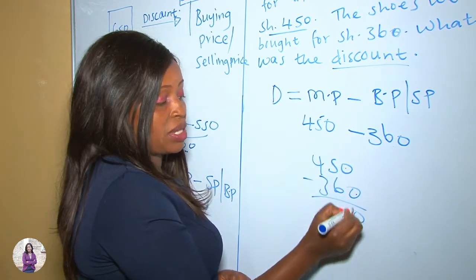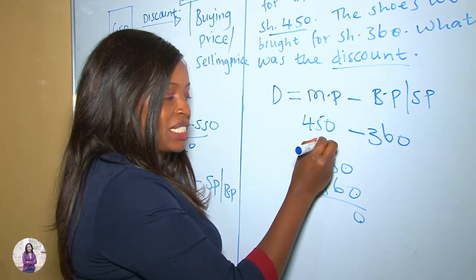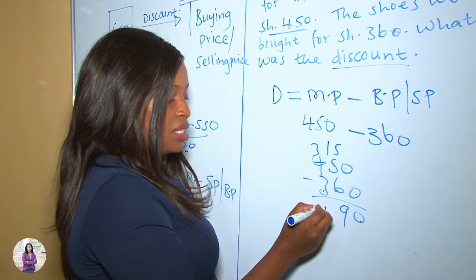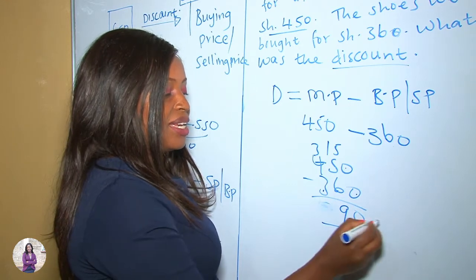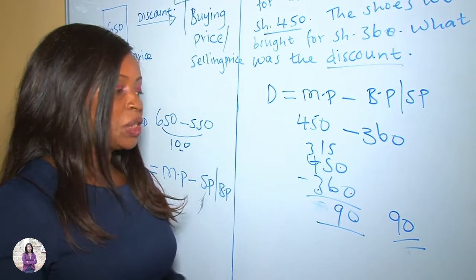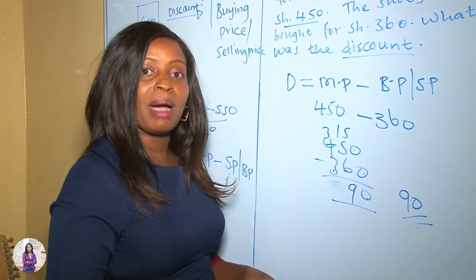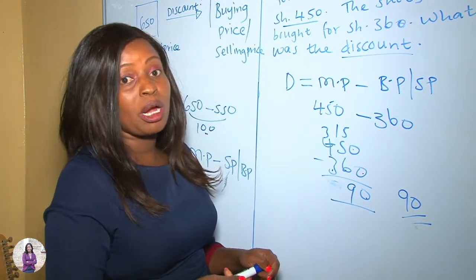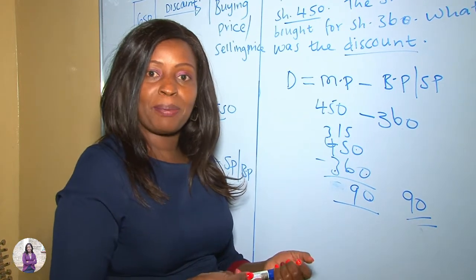Zero minus zero is zero; 5 cannot take away 6, so we borrow — 15 minus 6 is 9; 3 minus 3 is 0. Therefore the discount was 90 shillings. You can imagine if your mom sent you to buy the shoes knowing they cost 450 — when you come home with 90 shillings change, she'll be very happy!